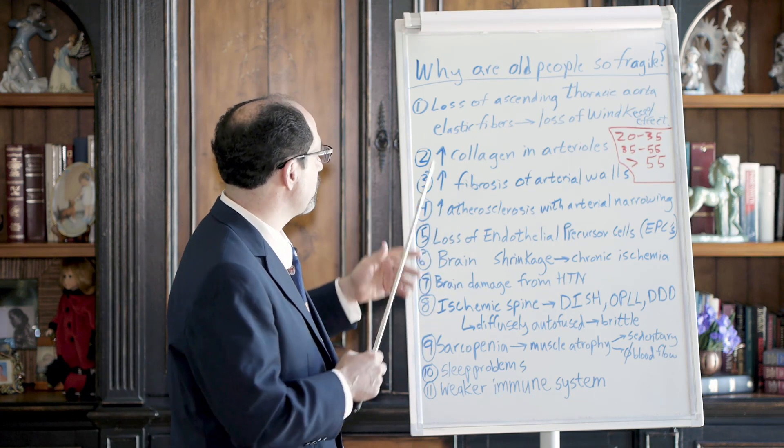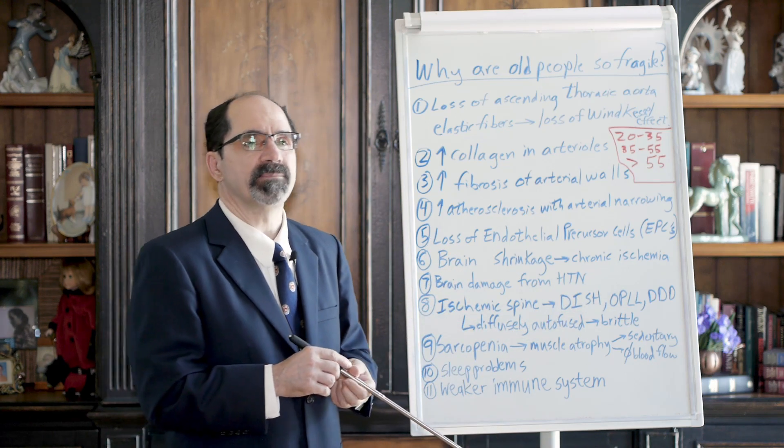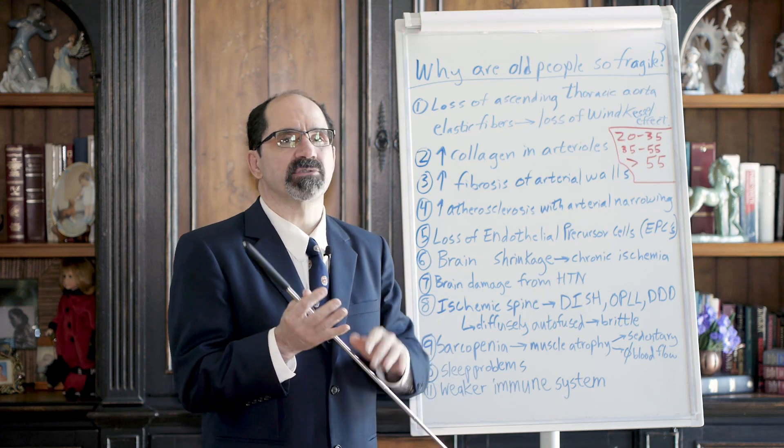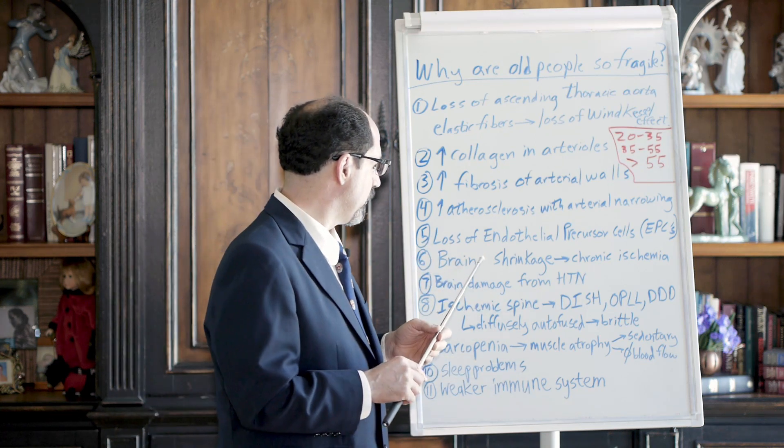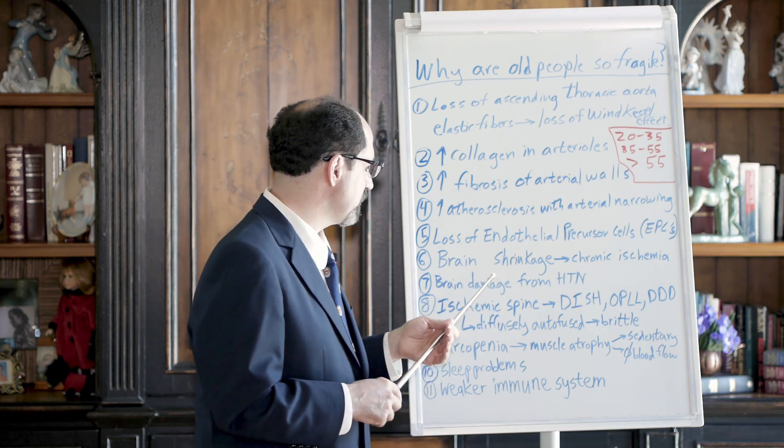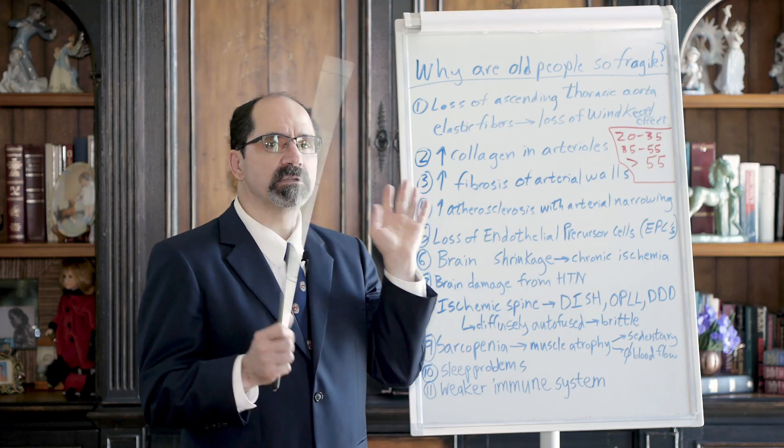What else makes old people fragile? Their brain is often shrunken, chronic lack of blood supply. I see that all the time, all these shrunken old brains. Brain damage - they could have had previous traumatic brain injury. Most common reason I see for brain damage is high blood pressure. I see that all day, every day.